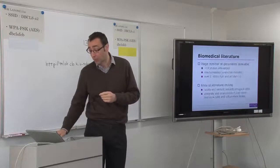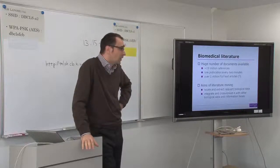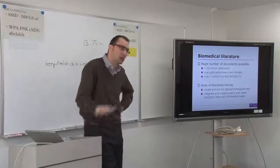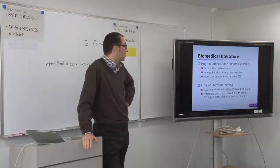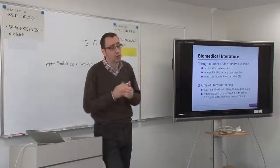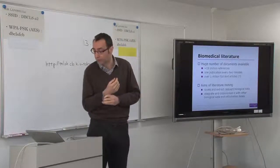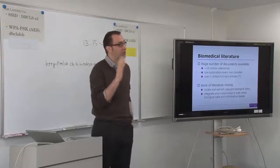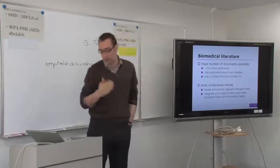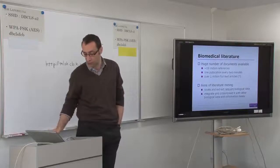As you probably know, biomedical literature is huge — there are around 19 million references in MEDLINE, although only 10 million are actually abstracts you can process, since the rest are in other languages or not available. Every two minutes there is one new publication. There is one million full-text articles that are somehow open access, but you can only really text mine about 100,000 of them. The aim of literature mining is to locate and extract relevant biological data — that is what biologists really need. It has to be focused, not just large scale for its own sake. The idea is to integrate this data and cross-link with other biological data sources.